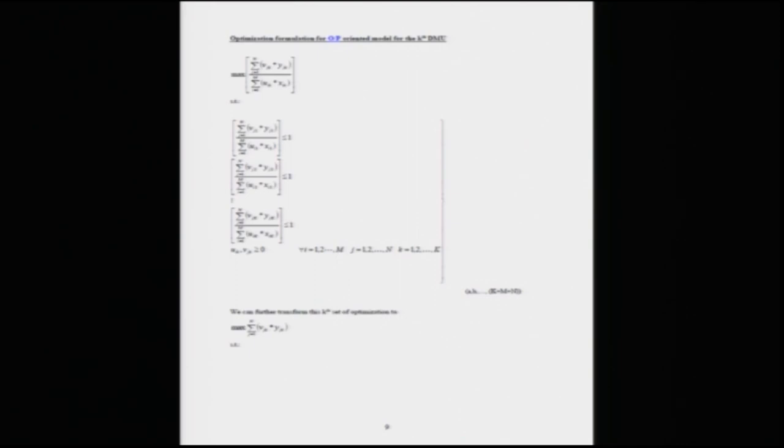Looking at this problem, it is a non-linear problem because it involves a ratio. We need to convert it into a simple linear optimization problem in order to solve it. Before proceeding, let me repeat: we are taking the maximization of the ratio of output to input for the kth DMU, and the constraints are all efficiencies for all K DMUs — each ratio of output to input less than or equal to 1. This is a non-linear formulation that needs to be converted to a linear formulation.